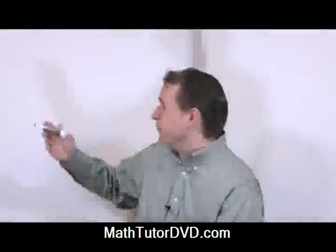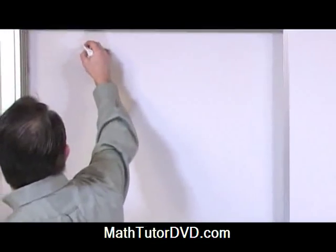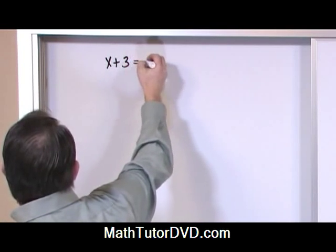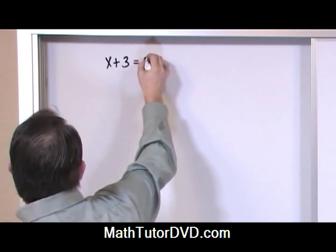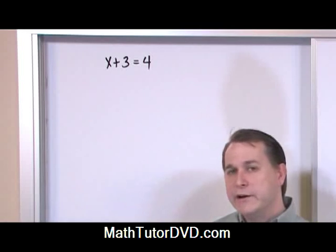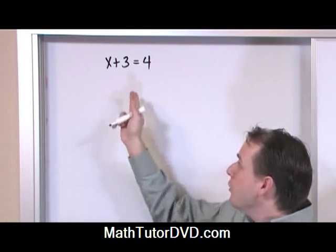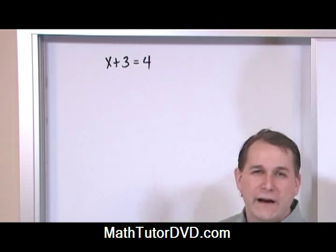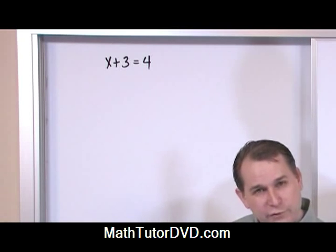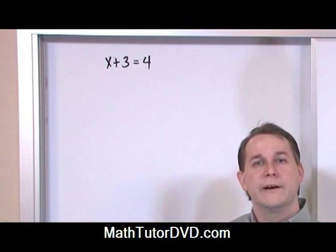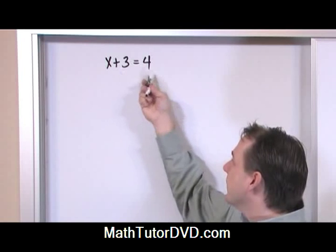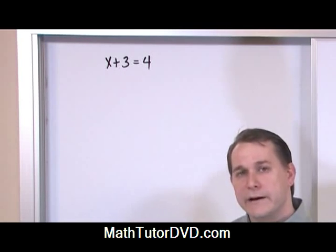A normal equation, like from Algebra 1, might be x plus 3 is equal to 4. You know how to solve that equation — the goal is to solve for the unknown value of x. You've done algebra, you know how to do that. You pull the 3 over, subtract, and you get the answer.